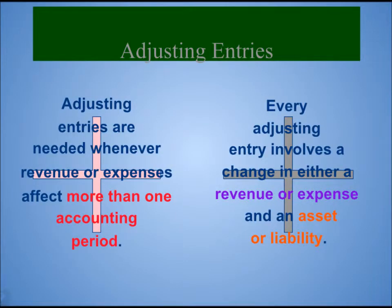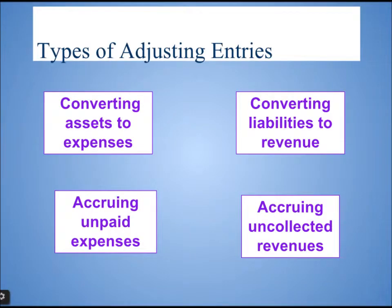Adjusting entries. Adjusting entries are needed whenever revenue or expenses affect more than one accounting period. Every adjusting entry involves a change in either revenue or expense, and an asset or liability. The types of adjusting entries are: number one, converting asset to expenses; converting liabilities to revenue; accruing unpaid expenses; and accruing uncollected revenues.